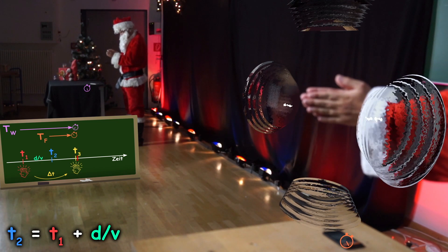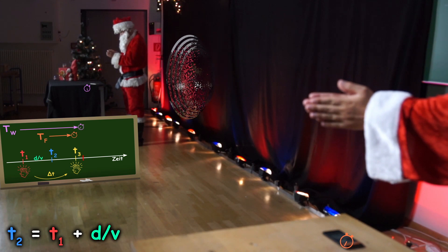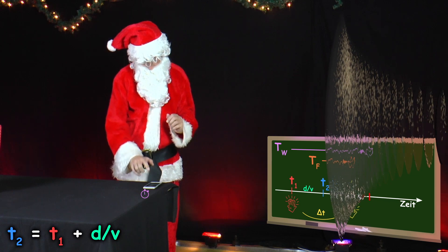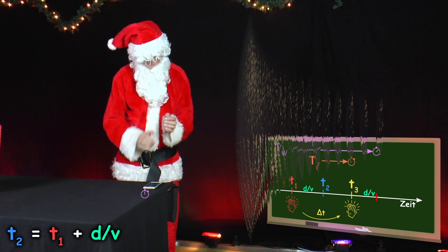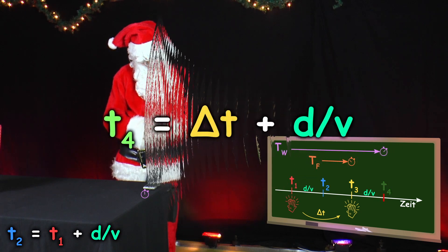The sound of his clapping must first run to Mr. Santa to stop his stopwatch. For this it needs the time D divided by V again. Thus the stopwatch of Mr. Santa stops at the time T4 equals delta T plus D divided by V.